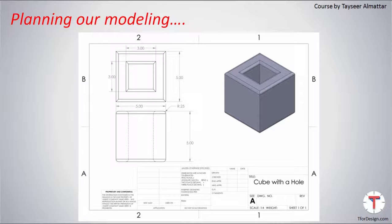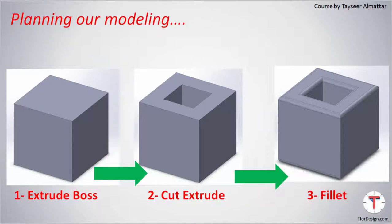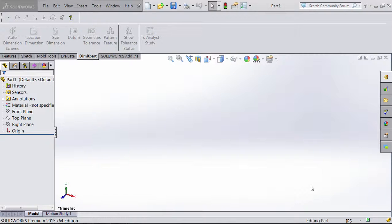Now let's go back to our model for this lecture. When we create models it's always good to plan our steps. For this model we can plan as follows: we start with a plain box using Extrude Boss, then cut a hole using Cut Extrude, and then apply a fillet.